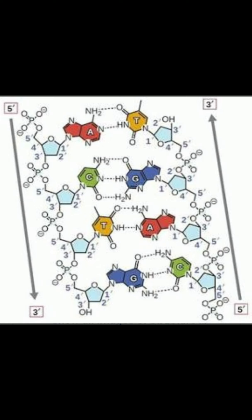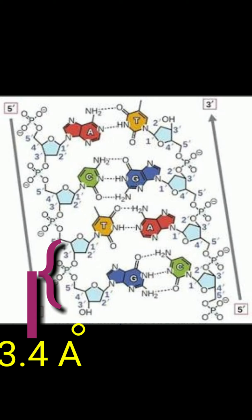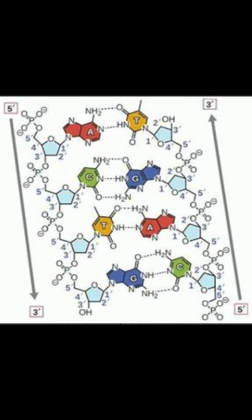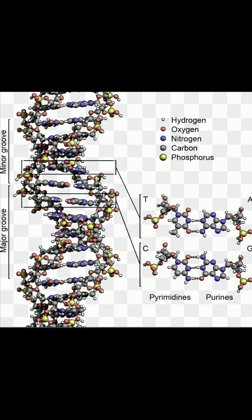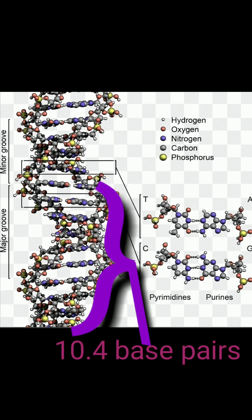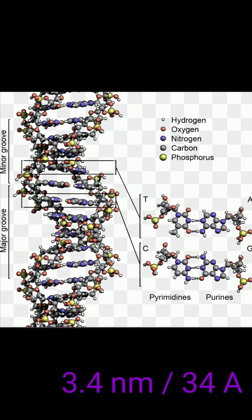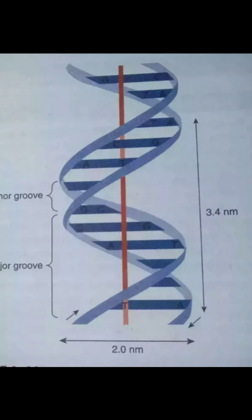The distance between consecutive nucleotide pairs is 0.34 nanometers or 3.4 angstroms. One complete turn of the DNA double helix is made up of 10.4 nucleotide pairs, maintaining a length of 3.4 nm or 34 angstroms. This spiral coiling of the two strands around each other creates a major groove and a minor groove between each complete turn.